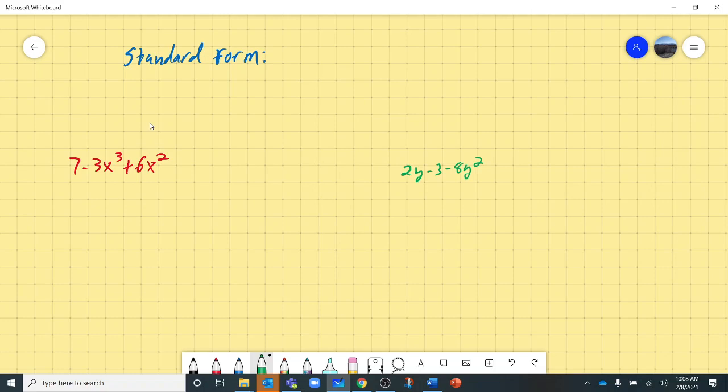Standard form of a polynomial. I didn't write that part. Standard form, talking about polynomials still. We write them from greatest degree to least degree.